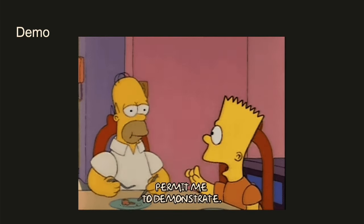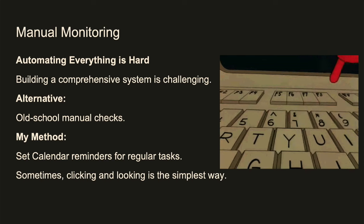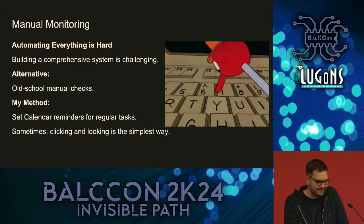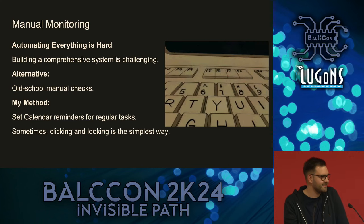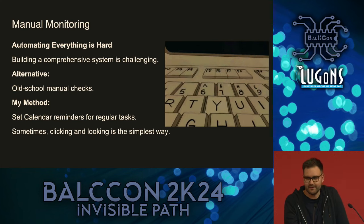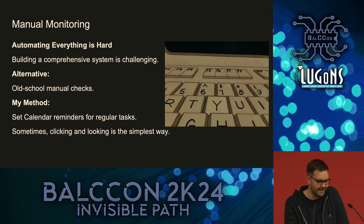There is a possibility to automate everything and build complex systems, but I needed to spend multiple days on it just to get all the data. And if they now see this talk and change their captcha, I have to do it all again. So sometimes it's easier to just do manual work. We had some cases of ransomware where I just set up a calendar reminder to check every day - go to the website, see if something changed or not. Because some things are not that critical, so it's just easier to do it manually.